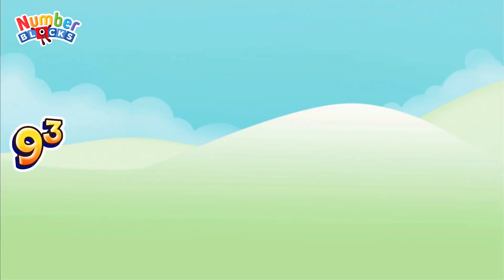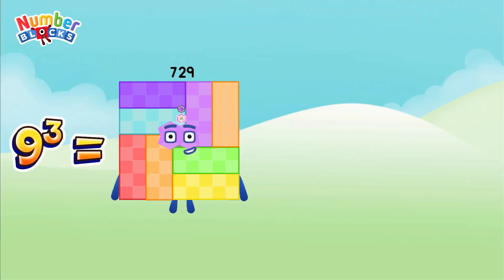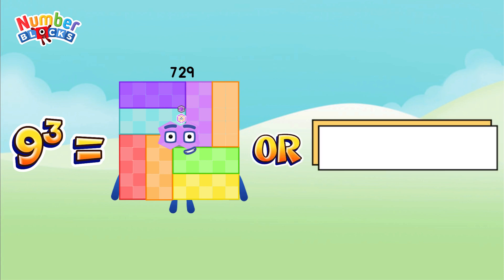9 cubed is equal to 729, or 9 multiplied by 9 multiplied by 9 is equal to 729.